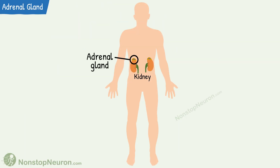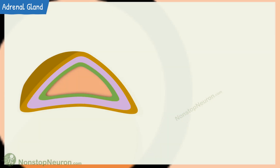The adrenal gland, as the name suggests, is positioned adrenal — that is, it lies close to the kidney, at the superior pole to be more precise. There are two adrenal glands in our body, one lying above each kidney.